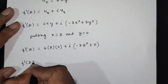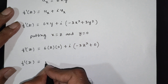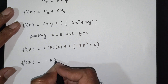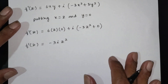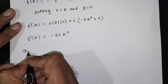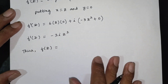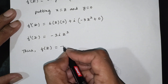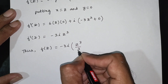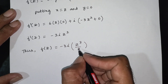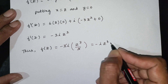Hence f of z is the integration of f dash of z. Integrating minus 3i times z squared: minus 3i is constant, z squared integrates to z cubed by 3, and the 3s cancel. So the final answer is f of z equal to minus i times z cubed.